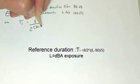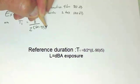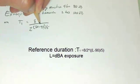The T1 is then calculated by 8 divided by 2 raised to the 80, which is the decibels, minus 90. Indeed, this is part of the formula, divided by 5.